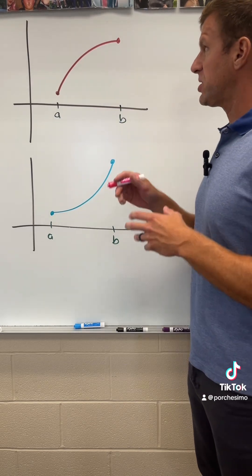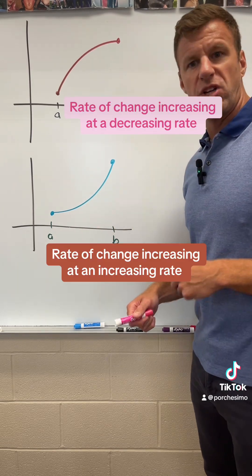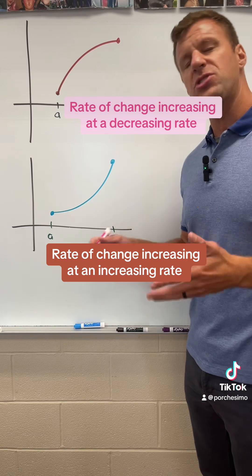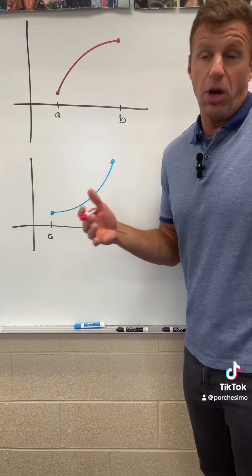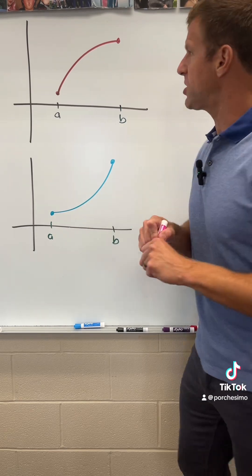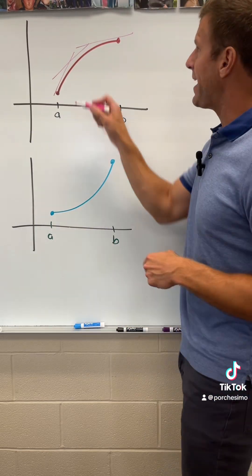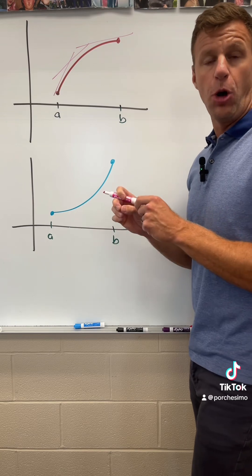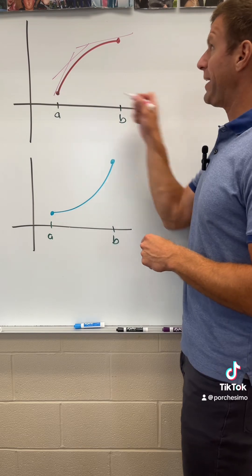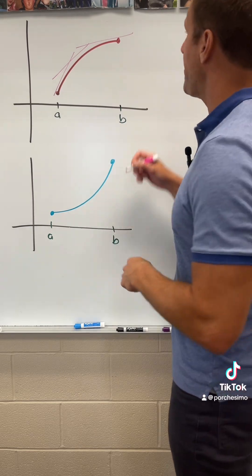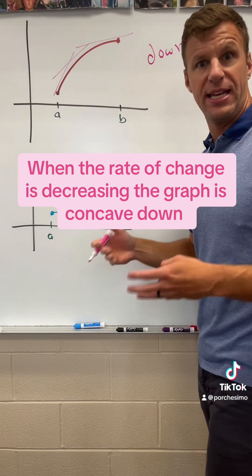Here we see the rates of change increasing at a decreasing rate. That can be really hard for some students to understand. When I think about rate of change, the first thing that comes to mind is slope. So let's draw in some slopes. As we move from A to B, those slopes are getting smaller — the rates of change are decreasing. So we're increasing at a decreasing rate, and that's what we call concave down. That's when your rate of change is decreasing.